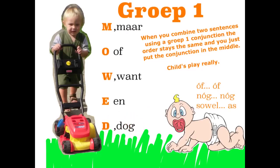You'll also notice that doch, want, and maar have commas before them. That's because when we join sentences using these conjunctions we need to remember to put in these commas before those particular words. Of and en don't get any punctuation. Of, nog, nog and sowel as are also in Groep 1, but I'll deal with those in another video.